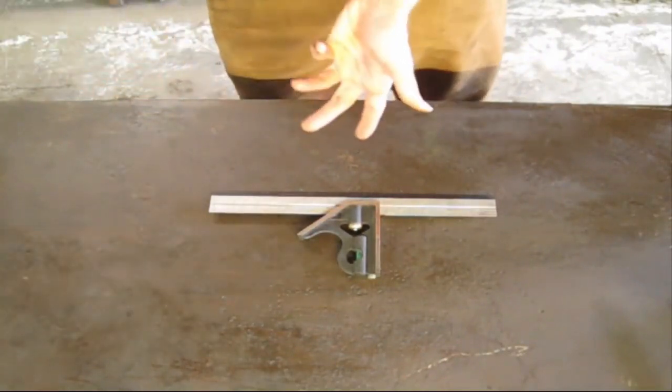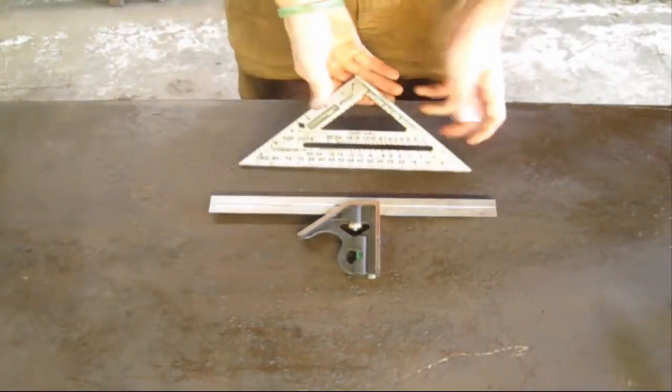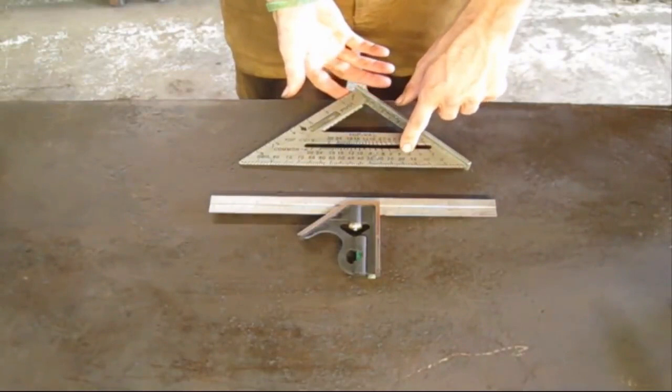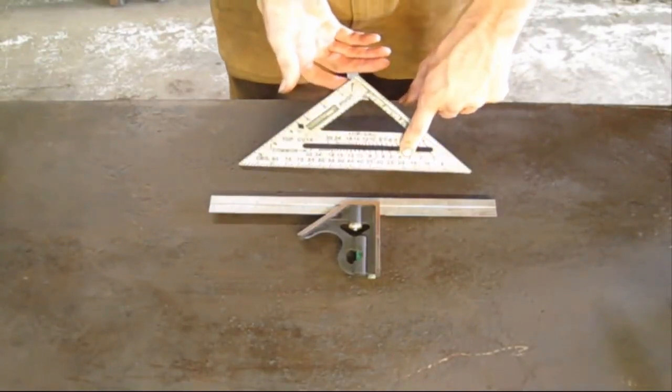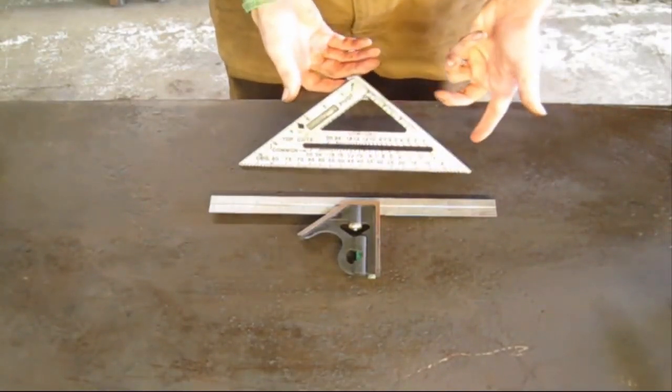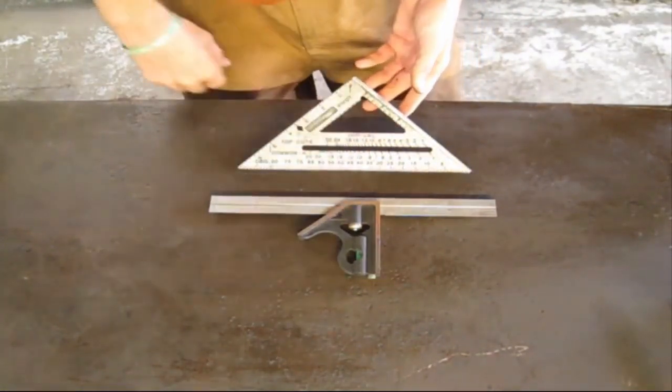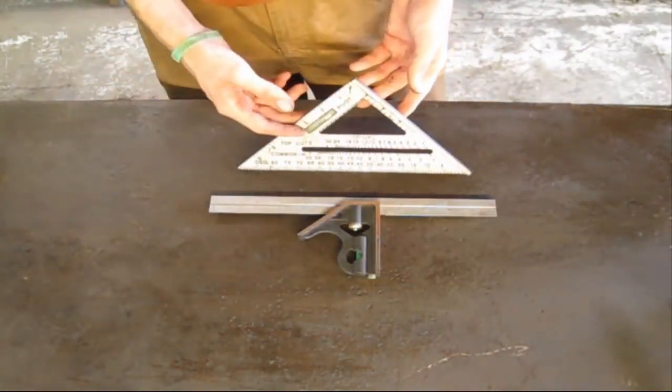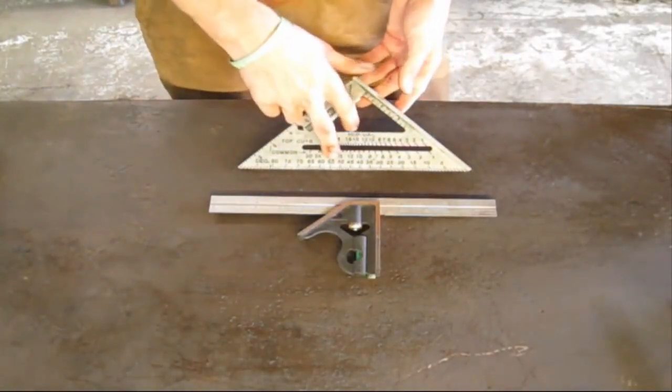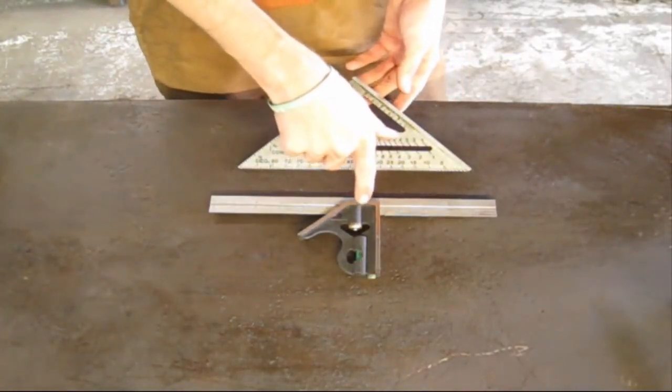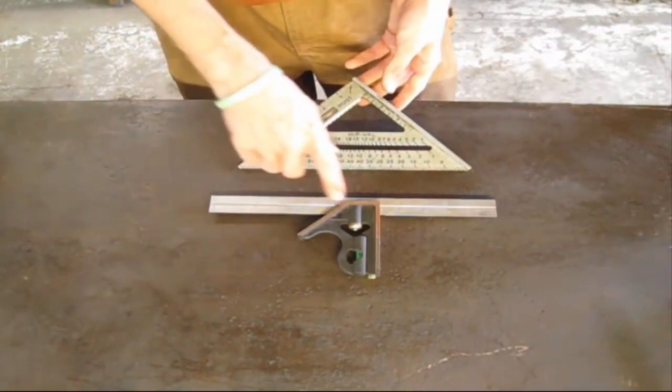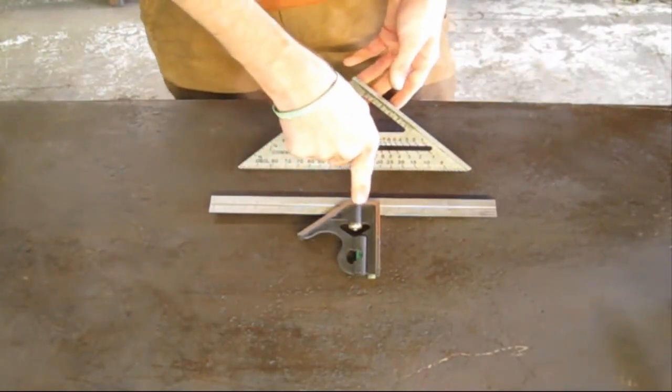If you're a fan of the show, you know that I love the speed square. This right here is a very utilitarian design of function and speed, hence the name. So what is the main difference between these two tools? Because the speed square was actually kind of an offshoot from the combination square.